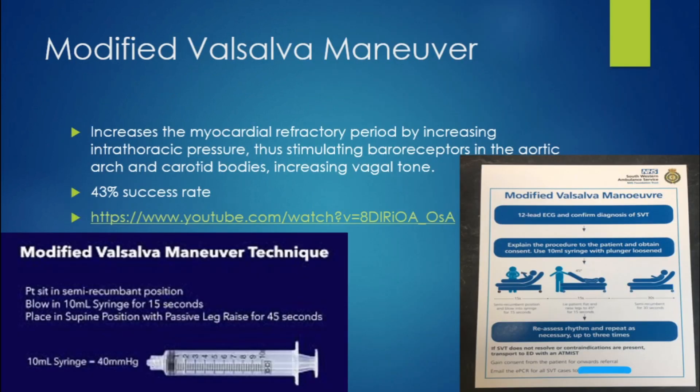A lot of vagal maneuvers don't have high success rates, but one I've been using and done research on is the modified Valsalva maneuver — it has a 43% success rate, which is a lot higher than 10%. To perform it, have the patient sit in a semi-recumbent position, blow into a syringe for about 15 seconds, then put them supine and lift their legs for 45 seconds. I'll show you a video on how to do it.